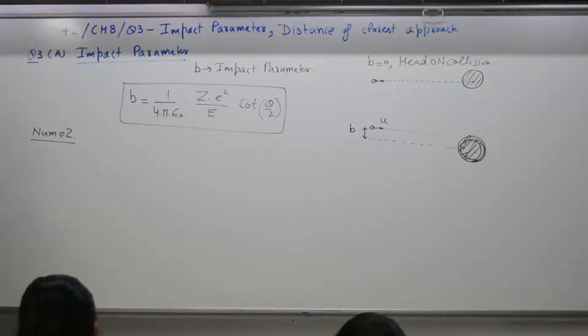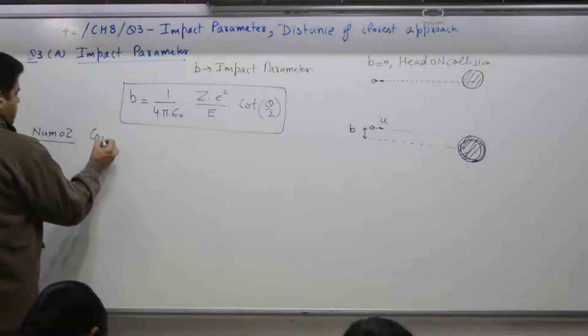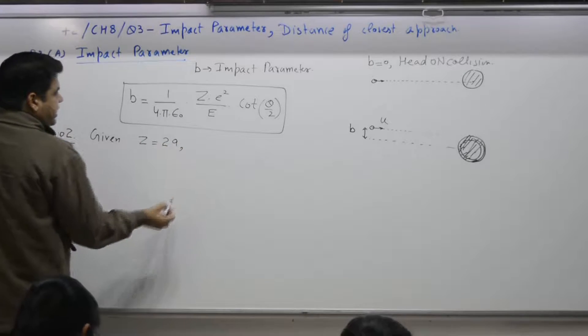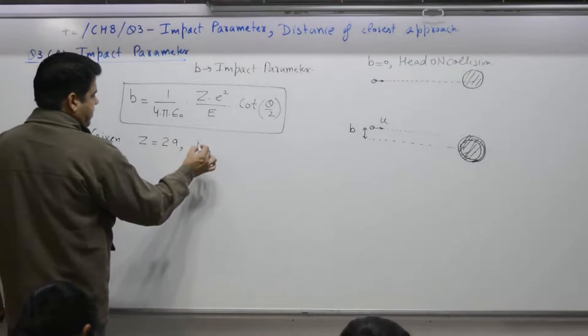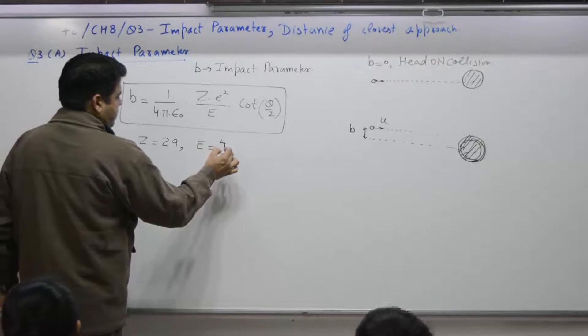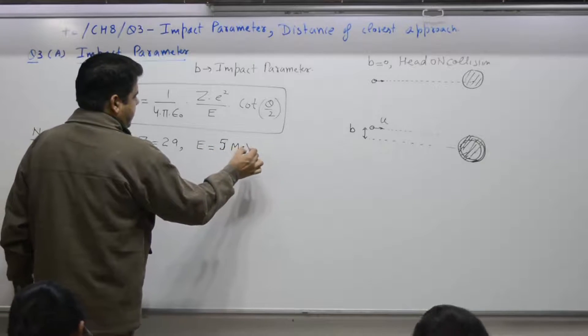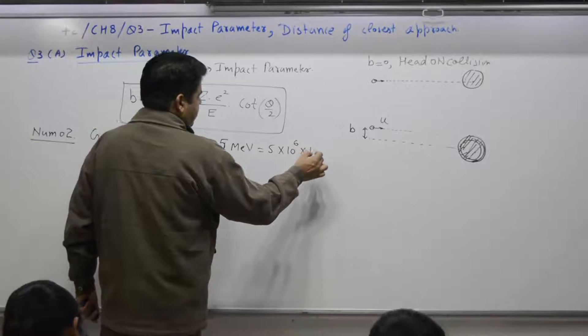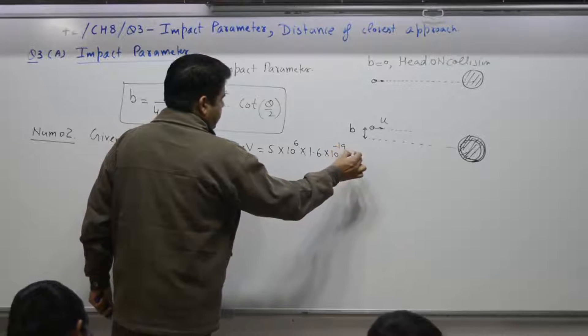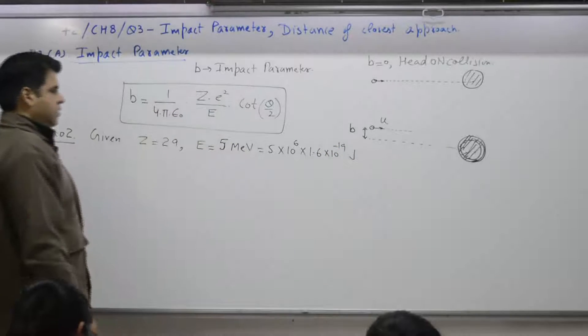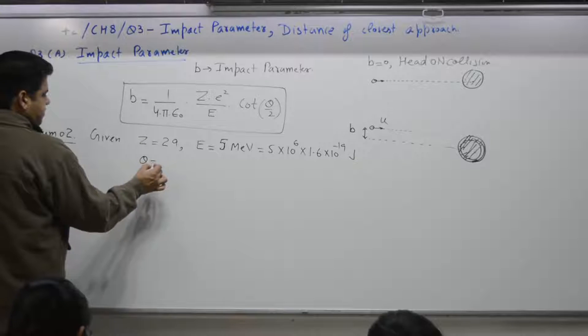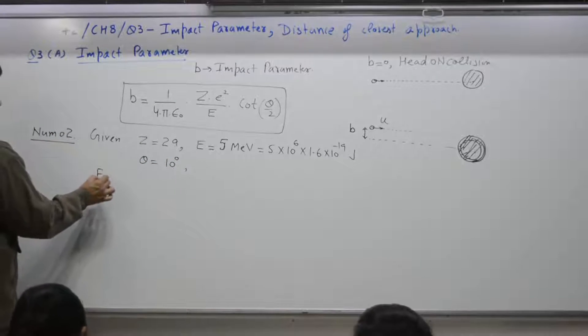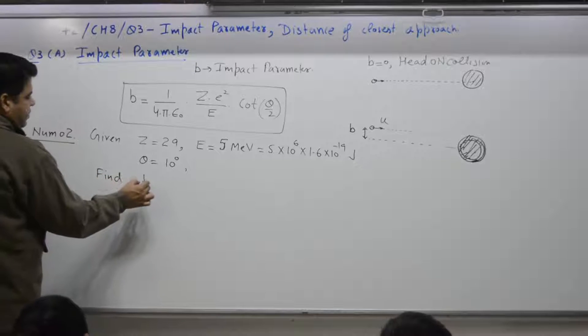Given is what? Yes, Z is equal to what? 29. Energy? 5 mega electron volt. 5 into 10 raised power 6 into 1.6 into 10 raised power minus 19 joule. Theta? Yes? 10 degree. You have to find out what? You have to find out B.